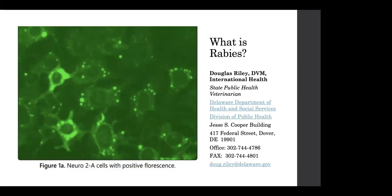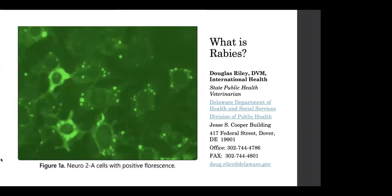Rabies itself is a fatal but preventable viral disease. It can spread to people and pets if they are bitten or scratched by a rabid animal. In the United States, rabies is mostly found in wild animals like bats, raccoons, skunk, and foxes. However, in many other countries, dogs still carry rabies, and most rabies deaths in people around the world are caused by dog bites. The rabies virus infects the central nervous system. If a person does not receive the appropriate medical care after a potential rabies exposure, the virus can cause disease in the brain, ultimately resulting in death. Rabies can be prevented by vaccinating pets, staying away from wildlife, and seeking medical care after potential exposures before symptoms start.